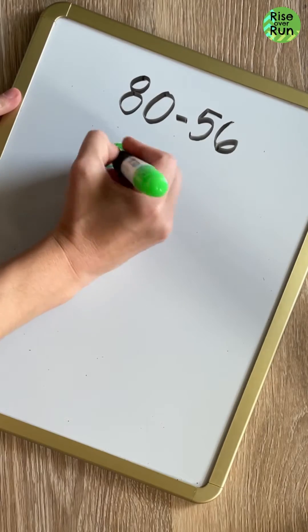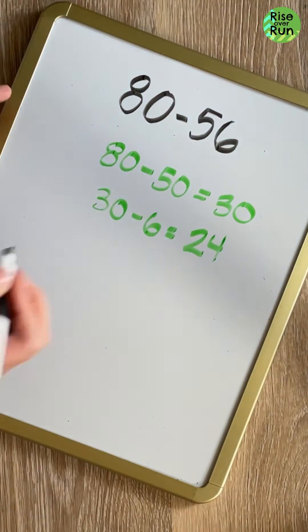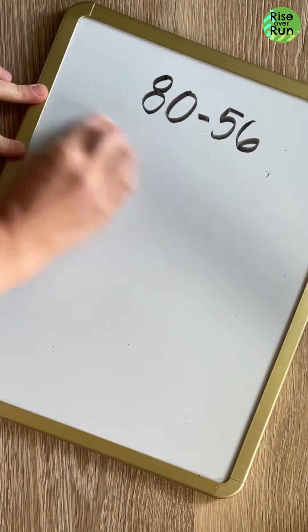A similar strategy is subtracting left to right. First, we subtract 50 to get 30, and then we subtract 6 to get 24. I can move left to right as long as I understand place value.